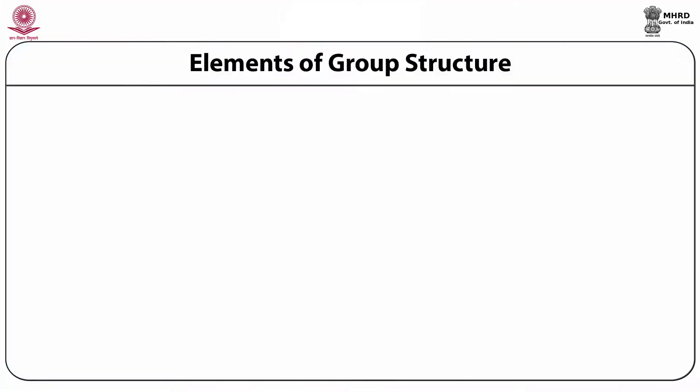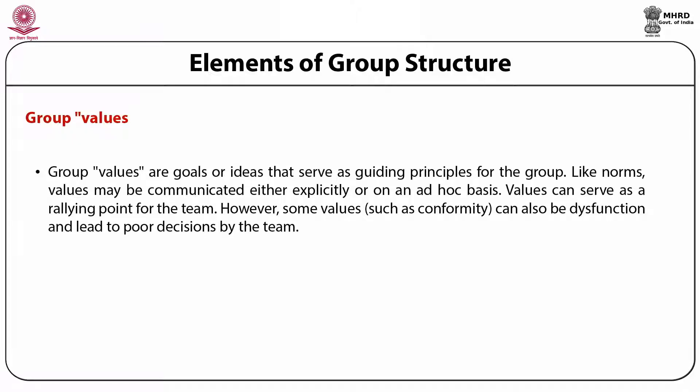Group norms are the informal rules that groups adopt to regulate members' behavior. Norms refer to what should be done and represent value judgments about appropriate behavior in social situations. Although they are infrequently written down or even discussed, norms have powerful influence on group behavior and group members are supposed to follow the norms if they want to remain in the group. Group values are goals or ideas that serve as guiding principles for the group. Like norms, values may be communicated either explicitly or on an ad hoc basis.